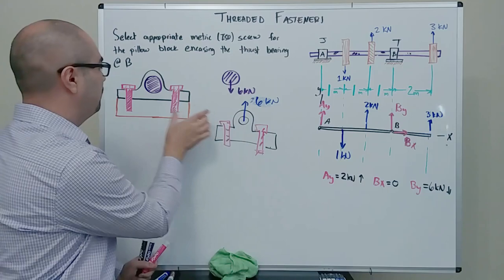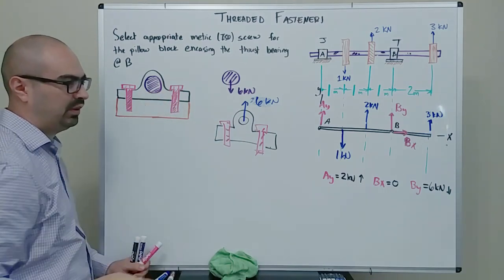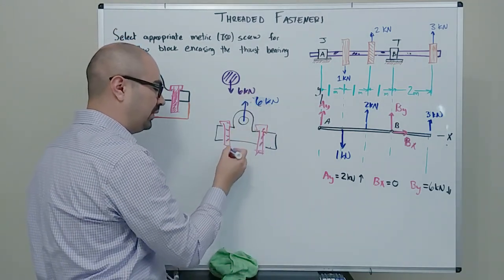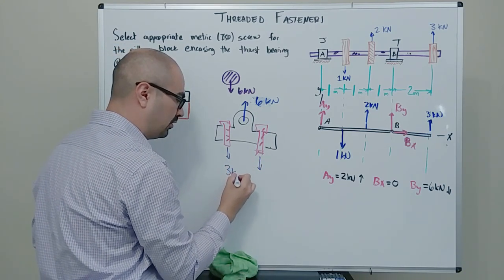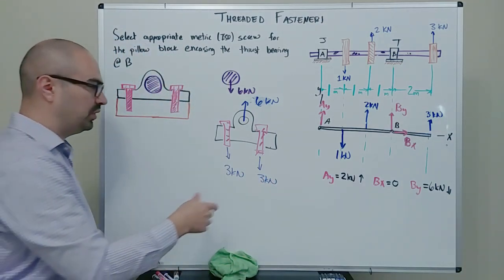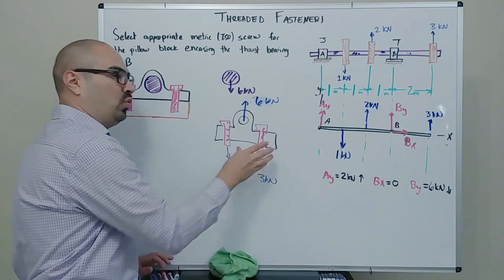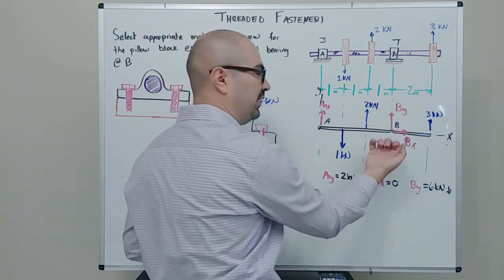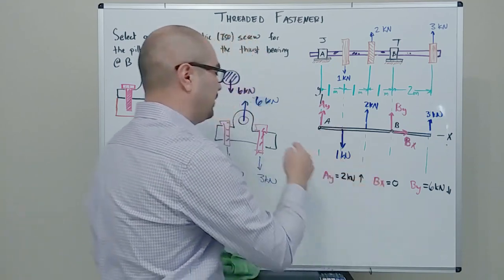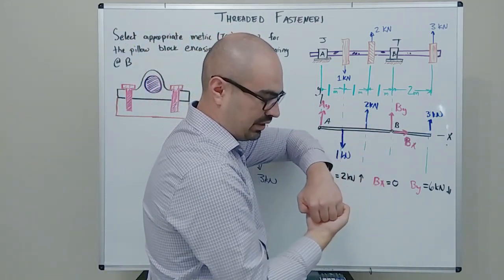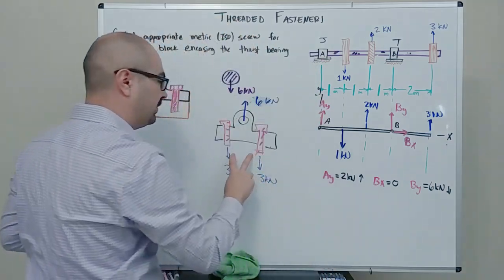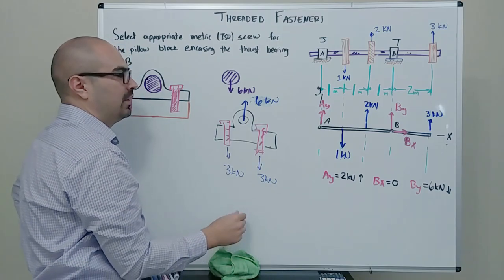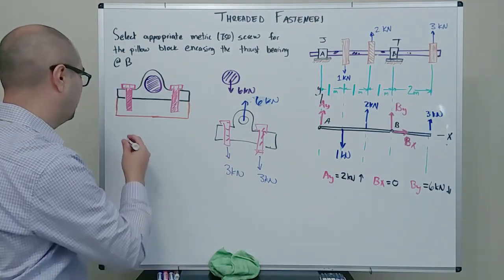There are two bolts holding this pillow block down. If we assume they're equally spaced — which they usually are — and the pillow block is being pushed up by six kilonewtons, then each bolt needs to provide three kilonewtons downward. So we've quickly figured out that the force on each bolt is three kilonewtons. This is the applied force.